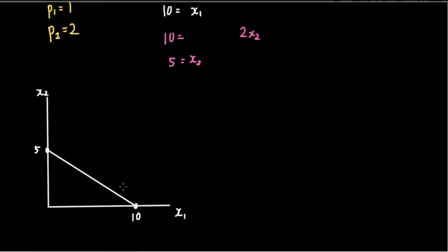The line that we see here is where the consumer actually uses up all of his budget to buy goods one and two. The area below the budget line, however, represents all possible combinations of x sub one and x sub two that the consumer can buy without using up his entire budget.